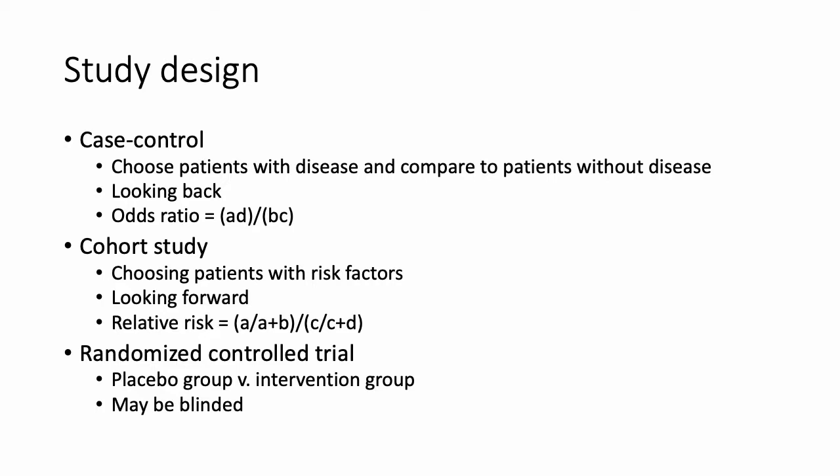A cohort study is similar but looks forward. You choose patients with risk factors and follow them to see if they develop the disease in question. You then calculate a relative risk — the risk of disease in patients who were exposed divided by the risk of disease in patients without exposure — or A over A plus B, divided by C over C plus D.